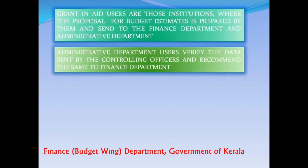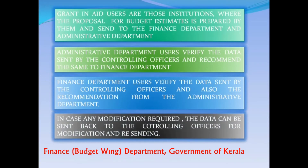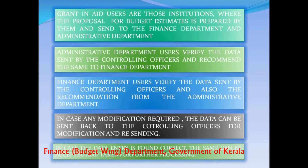Administrative Department users verify the data sent by the Controlling Officers and recommend the same to the Finance Department. Finance Department users verify the data sent by the Controlling Officers and also the recommendation from the Administrative Department. In case any modification is required, the data can be sent back to the Controlling Officers. If the data entry is found correct, the same can be accepted and taken for further processing.